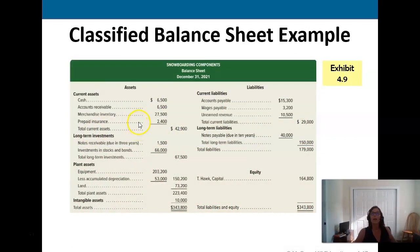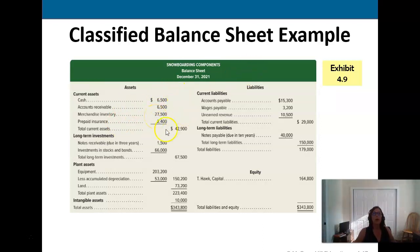If we take our balance sheet — this is Snowboarding Components rather than the Fast Forward Company — it shows the current assets: cash, accounts receivable, inventory, and prepaid insurance. We expect to turn all of those over within a year. We may have situations where people owe us money, but unlike accounts receivable, we really hope to collect those within a year.